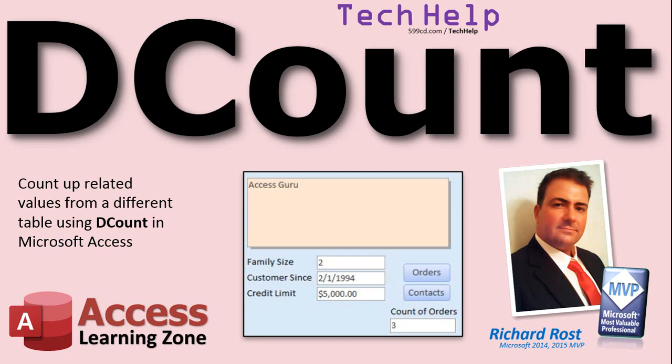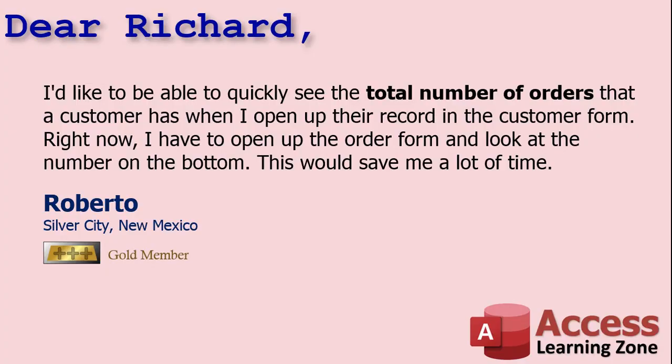We are going to use a very powerful function called DCount. Today's question comes from Roberto in Silver City, New Mexico, a gold member — which is kind of funny because he's from Silver City but he's a gold member. Roberto says he'd like to quickly see the total number of orders a customer has when he opens up the record in the customer form. Right now he has to open up the order form and look at the number on the bottom. Well, of course Roberto, there's a way to do this — you can do just about anything in Access.